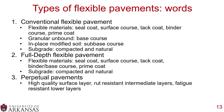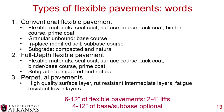Perpetual pavements, pioneered by Dave Tim at Auburn University, feature a high-quality surface layer, a rut-resistant intermediate layer, and fatigue-resistant lower layers. Flexible pavement thickness is generally 6 to 12 inches — down to 2 inches on local roads — placed in 2 to 4 inch lifts, with an optional 4 to 12 inches of base and/or sub-base.